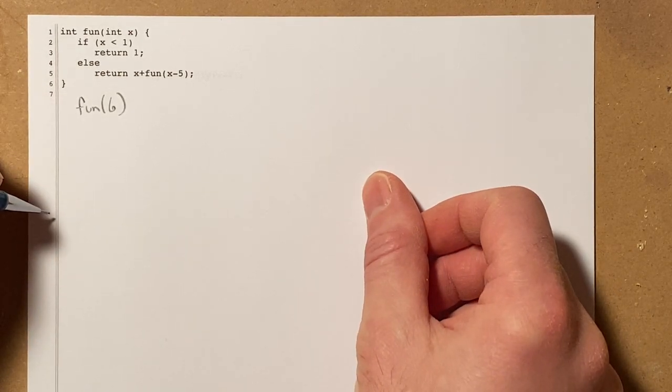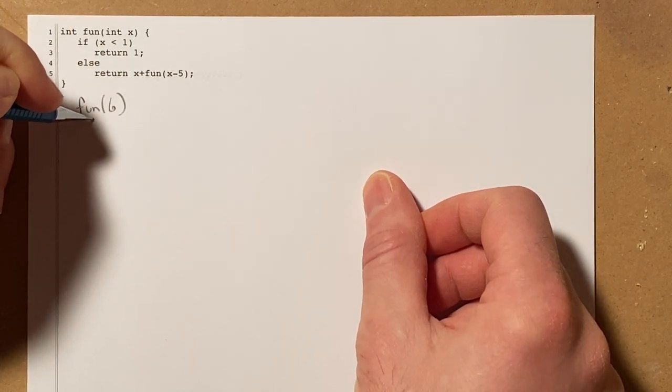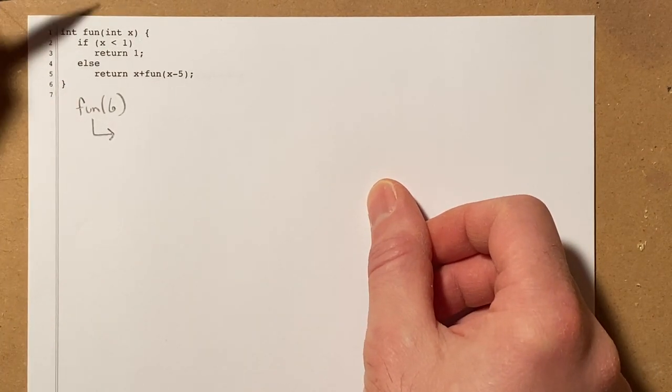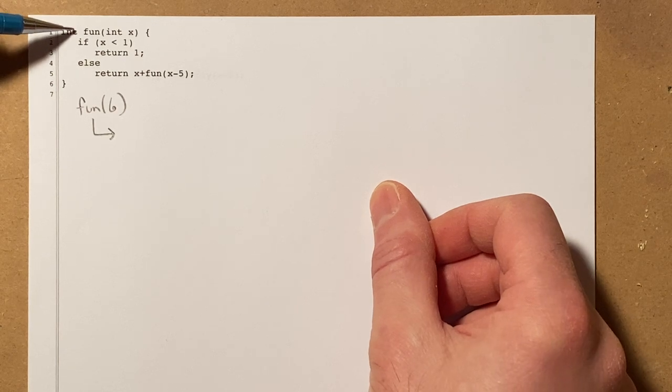So I write out fun 6 here and then I write a little arrow to show that's the function call and then I'm going to just trace through the code like we normally would when we do tracing.